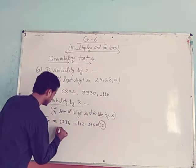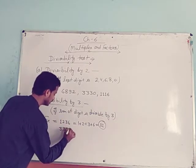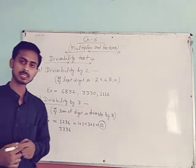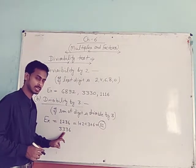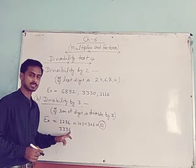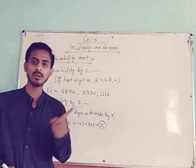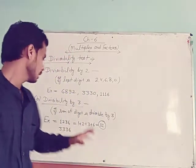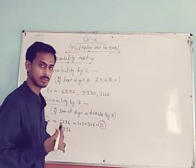One more example: 3336. Sum of digits: 3 + 3 + 3 + 6 = 15. And 3 × 5 = 15, so this number is also divisible by 3.